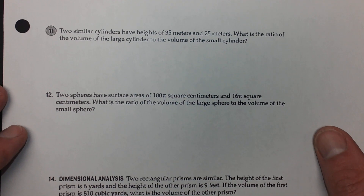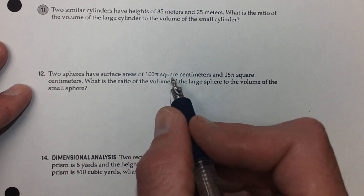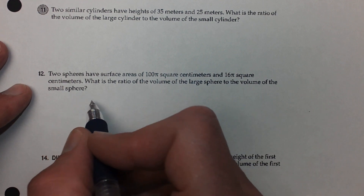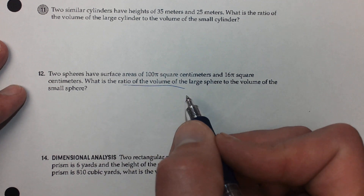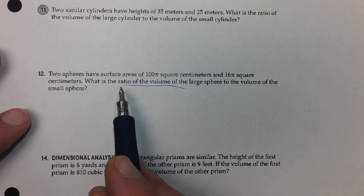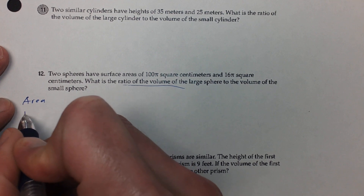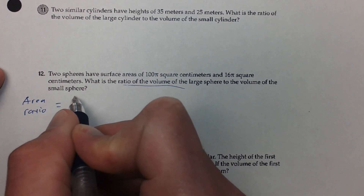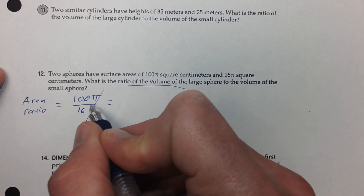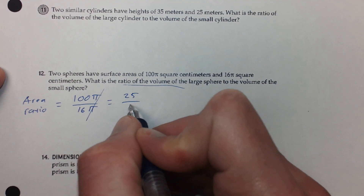Okay, so that was number 5. Let's go down to number 12. Two spheres have surface areas given: one is 100π square centimeters, the other is 16π square centimeters. What you want to find is the ratio of the volumes. This isn't a typical problem because you have surface areas given. If you have both of them, you can compute the area ratio pretty easily — take the first one on top, second one on the bottom. You get 100 over 16, which reduces by a factor of 4 to 25 over 4.